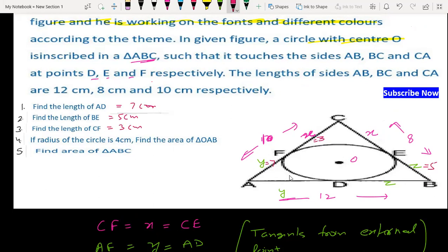Fourth part, area of triangle AOD - we can find it as half into base into height. So half into AB into OD. AB is y plus z, which is 12, and radius is 4. So 24 cm squared.